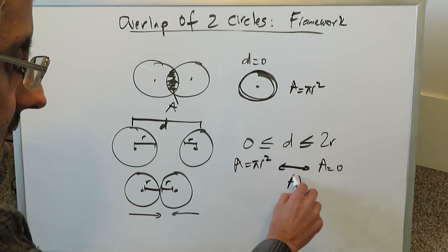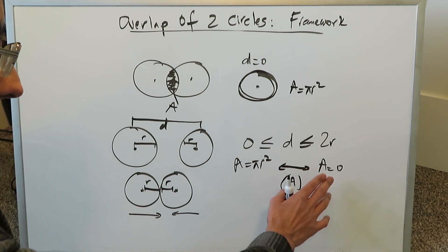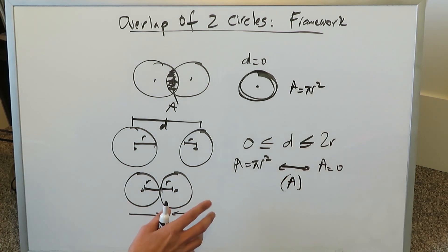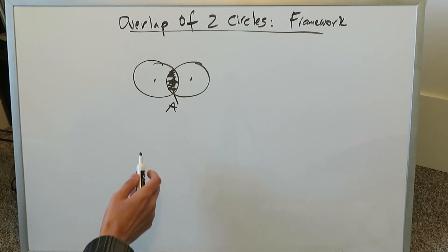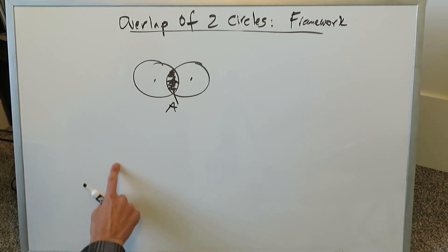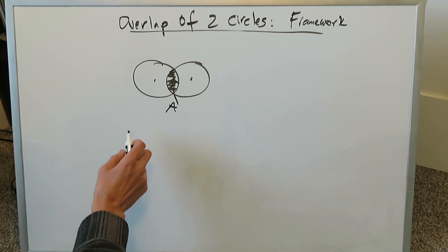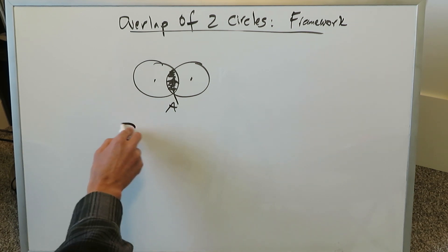We're looking at those instances in between: how do you calculate this area where you have some overlap but not a complete overlap? That will be the framework of this video — we're going to try to create a formula. It's not easy but we're going to try to explain it in a good manner. There is a lot involved and we have to examine it in a piece-by-piece manner.